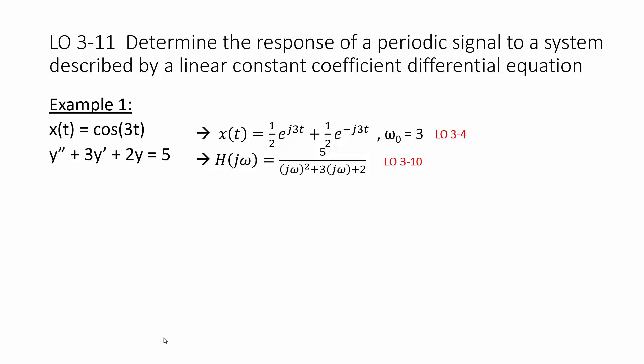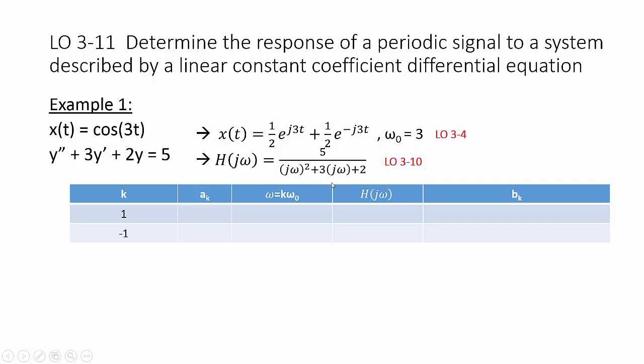There was a lot of writing on the previous slide. Let's see if we can simplify things a little. We've got that original input, which we use learning outcome 3.4, to come up with an Euler expansion and our Fourier series coefficients. Make sure we know what our fundamental frequency is. We take our differential equation and with learning outcome 3.10, come up with an h of j omega. To organize all that work on the previous slide, let's build a table. I really encourage you to do this. It organizes your work. And hopefully in addition to organizing your work, we'll organize your thoughts. The k values which we have in our x of t are 1 and negative 1. Our a sub k values are 1 half for both k is 1 and k is negative 1.